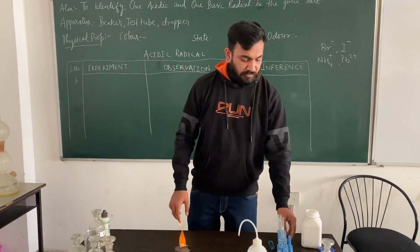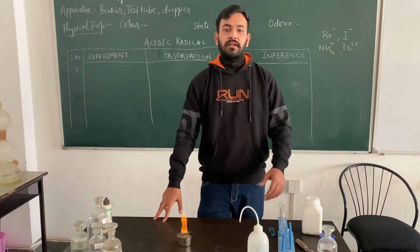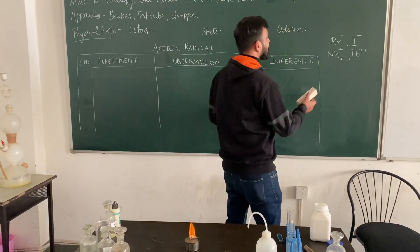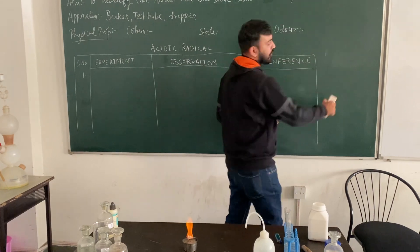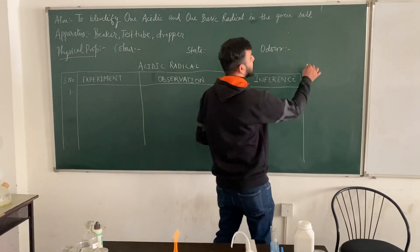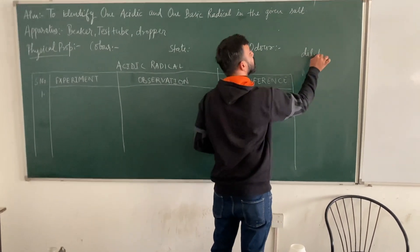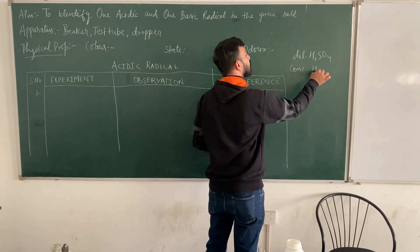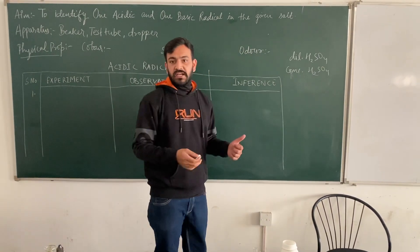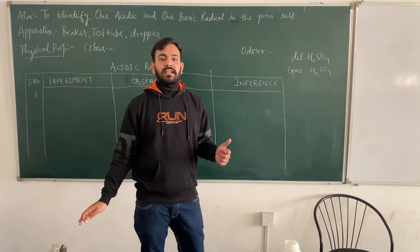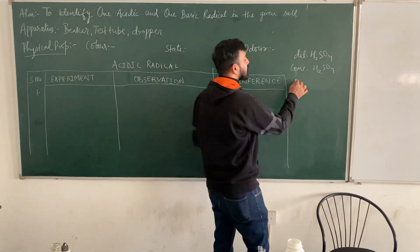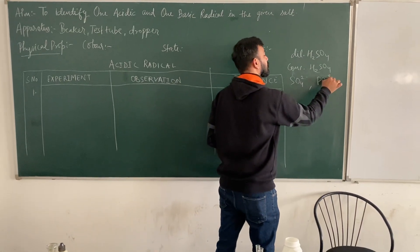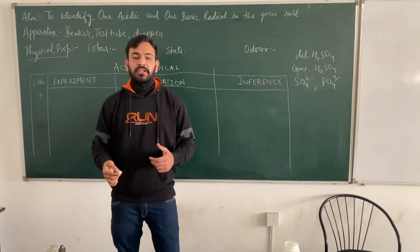Now we are going to perform salt analysis for acidic radicals. As we know, there are 3 groups by which they can be identified. One is with dilute H₂SO₄. Second is with concentrated H₂SO₄. And third, there are 2 ions which are independent — one is sulphate and the other is phosphate.